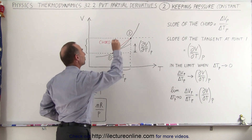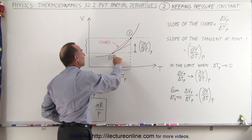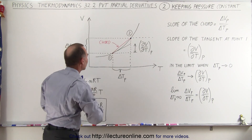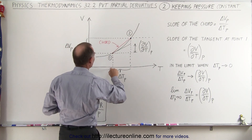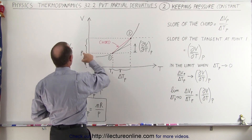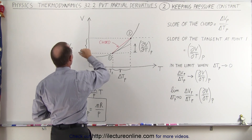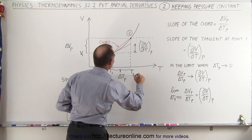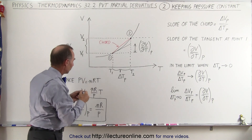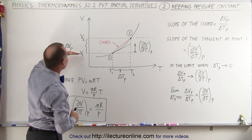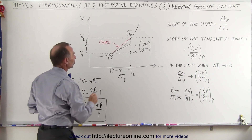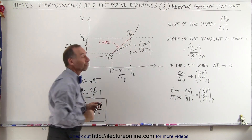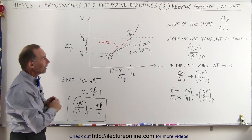We pick two specific points, two specific states — we call these state 1 and state 2. In state 1 we have a specific temperature T1 and volume V1, and at the different state we have temperature T2 and volume V2. So there's been a change in volume from V1 to V2 and a change in temperature from T1 to T2 as we go from state 1 to state 2, with the pressure remaining constant.